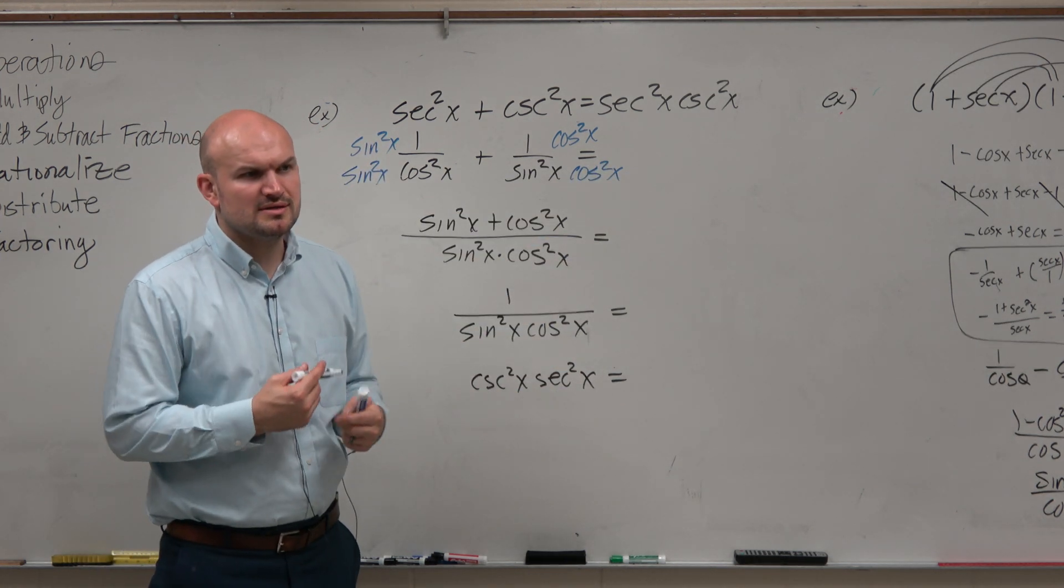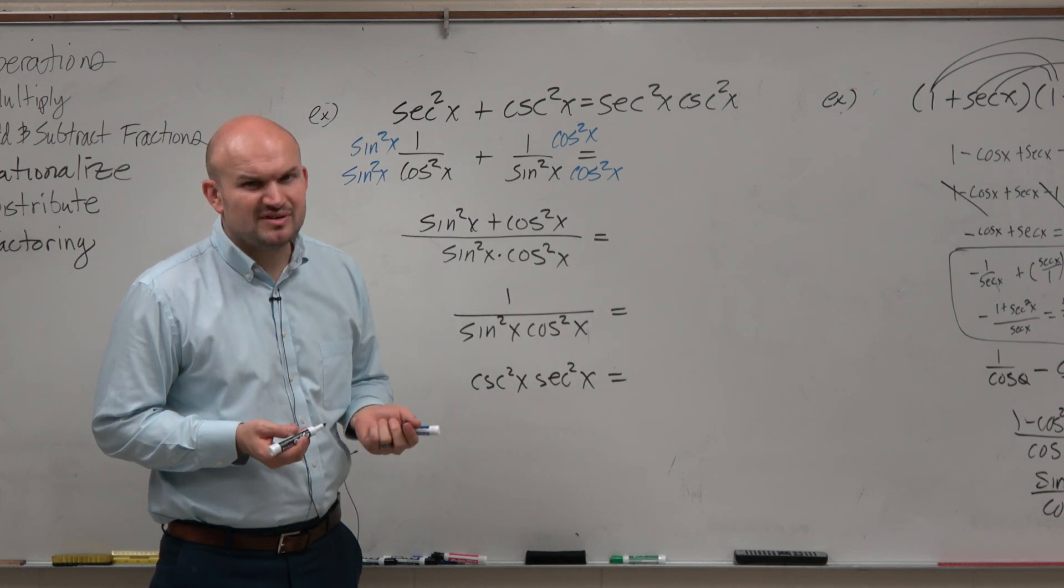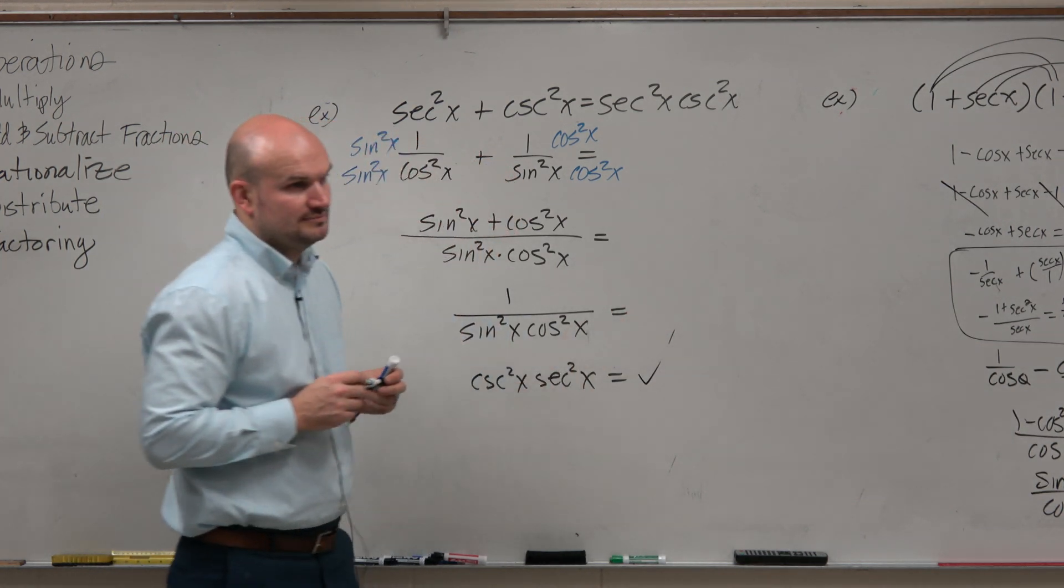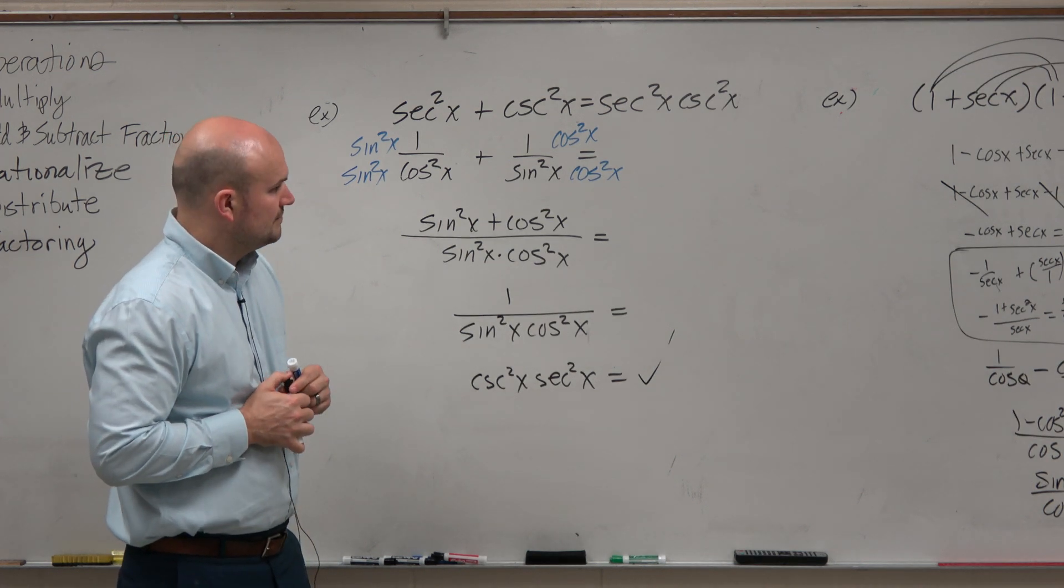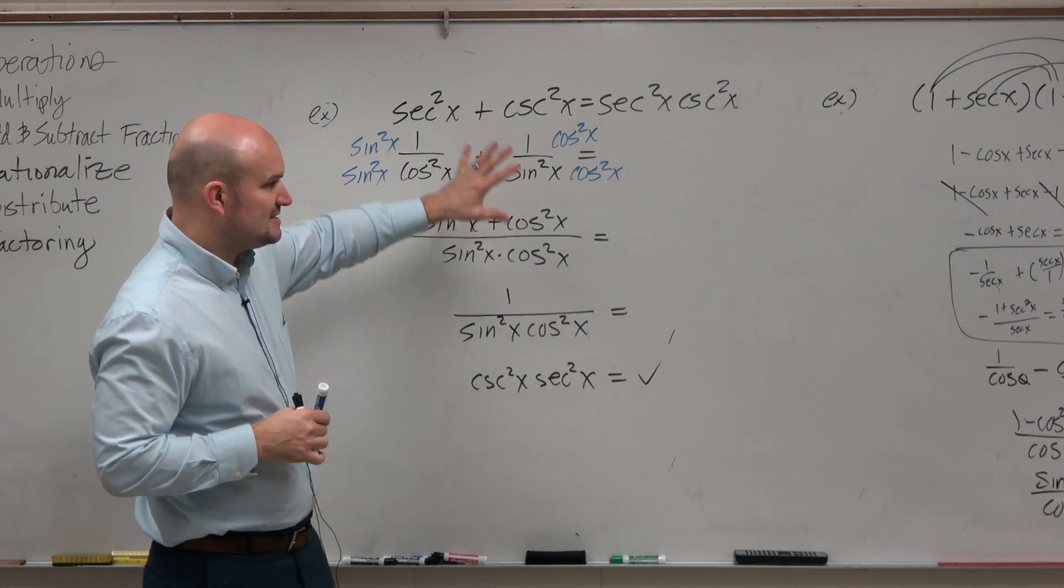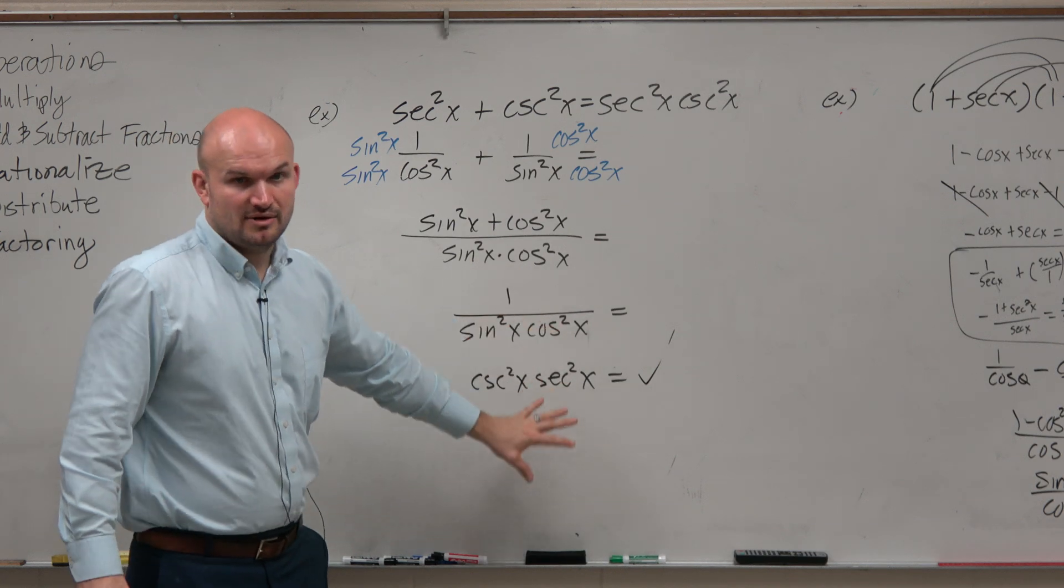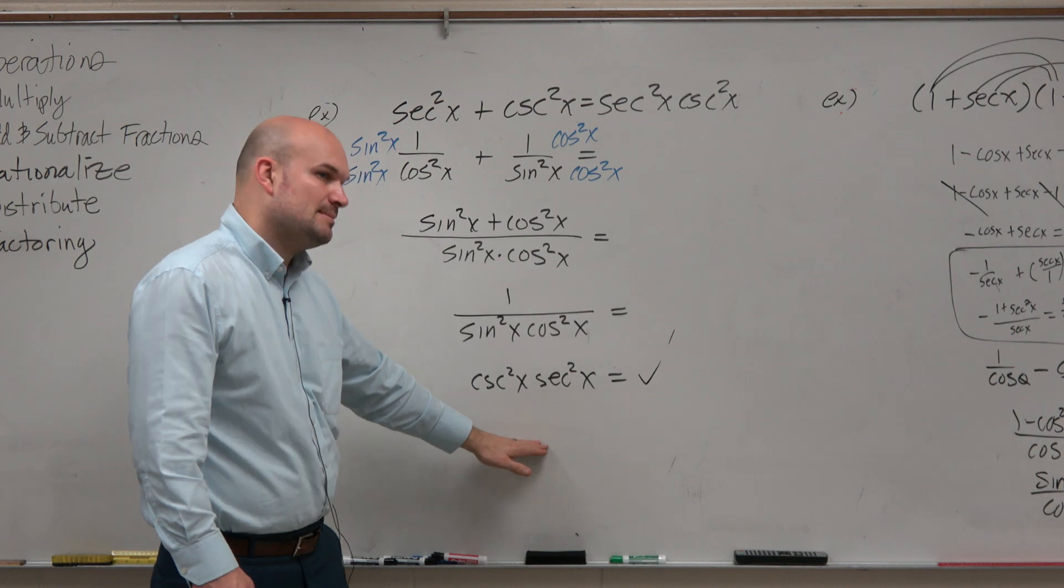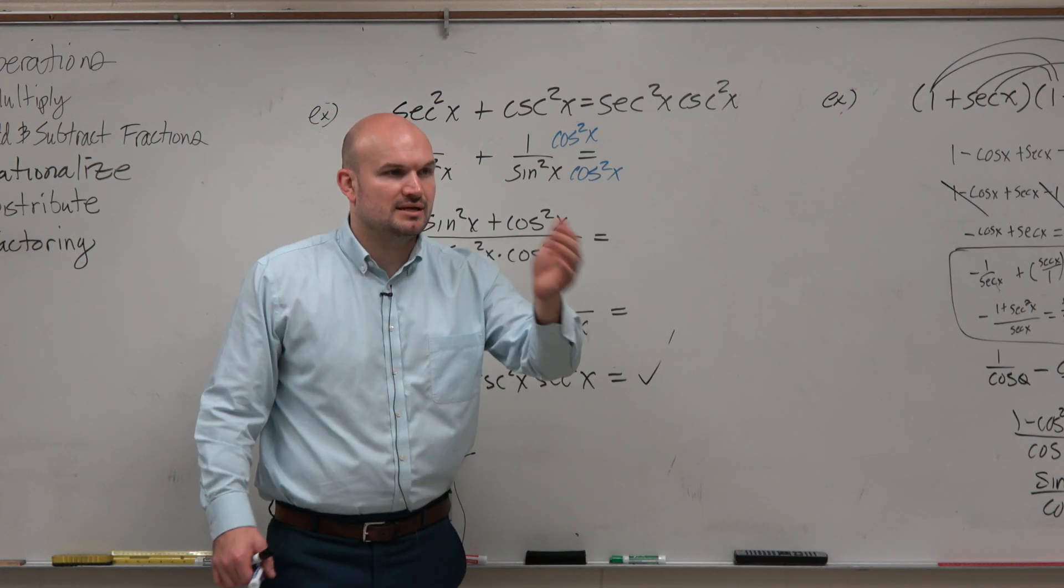Now, it doesn't matter that the orders switch around. Just 3 times 4, 4 times 3? No. So you don't need to go back and switch them around, guys. That's fine. OK? But you guys can see I stayed on one side, right? I showed each step. And I kept on applying all my identities till I got the exact same on the left side as it was on the right side.